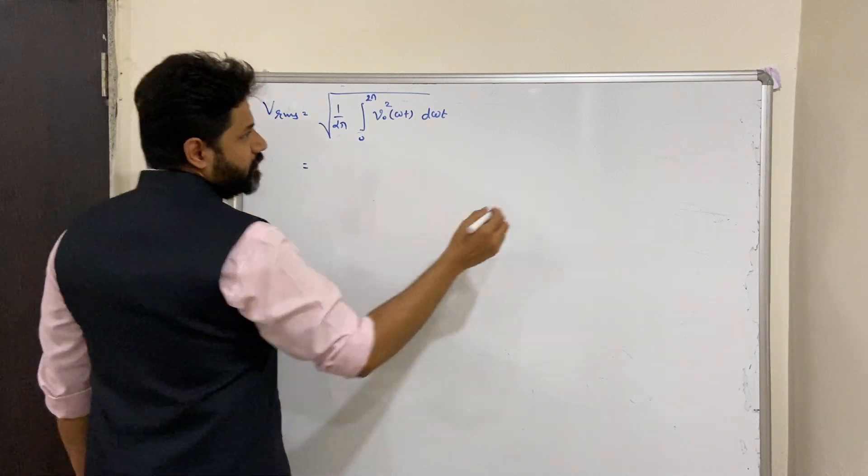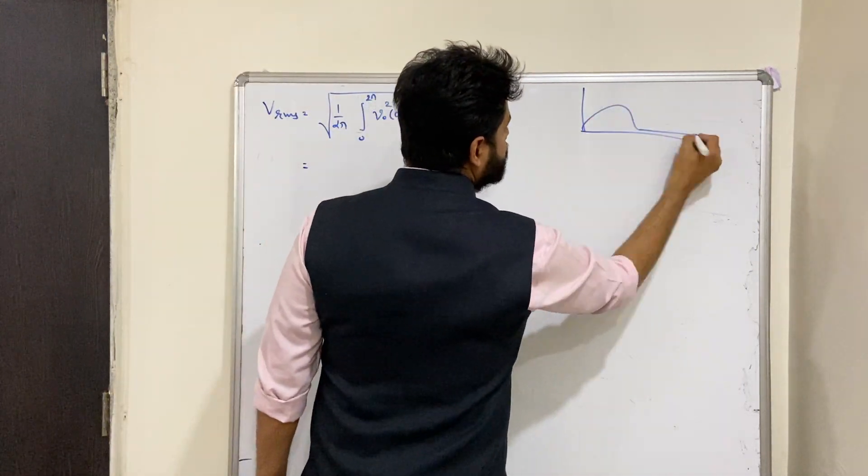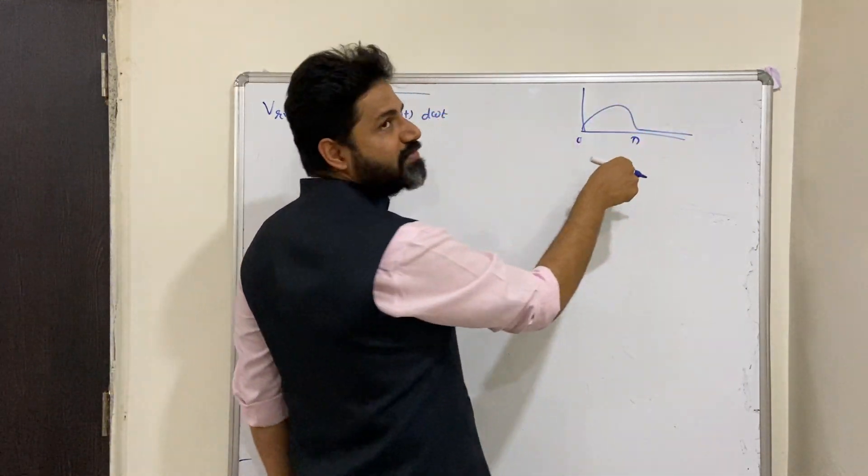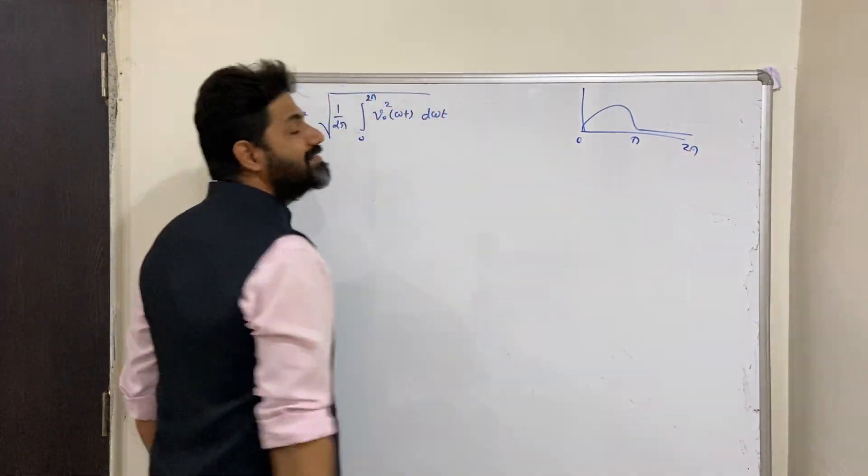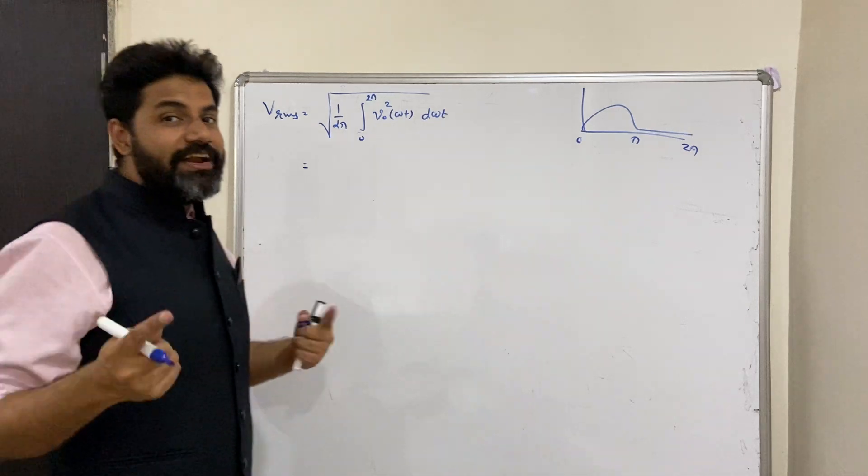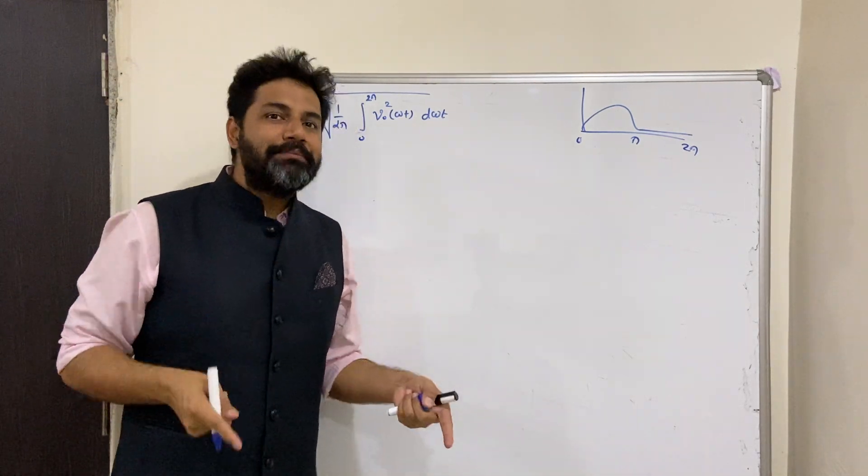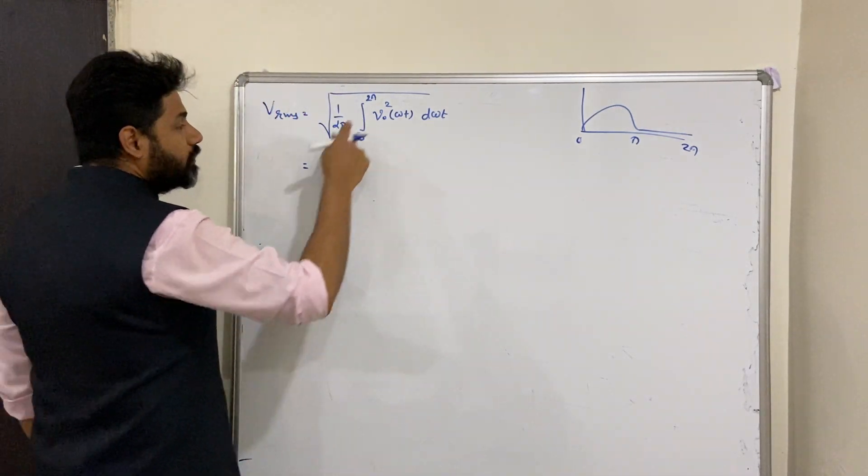We know what is the value of V0. It is like this: zero to π, Vm sin, and π to 2π, zero. So π to 2π, it is zero. See, all the videos are interlinked.